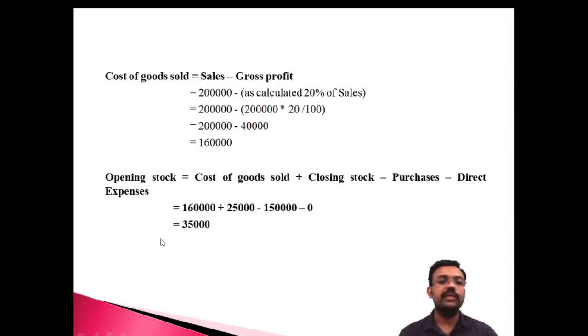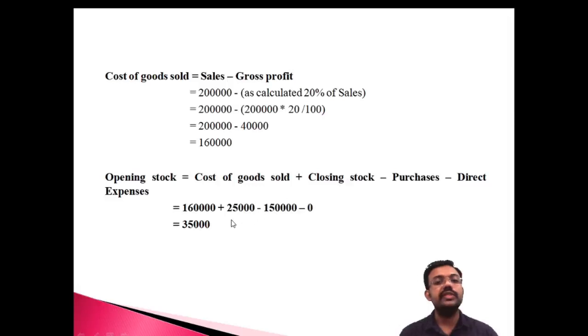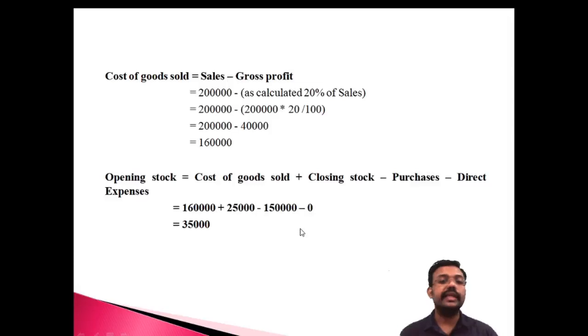To summarize Problem 1: the gross profit was given as a percentage of cost of sales and was converted to a percentage of sales. Cost of Goods Sold = 1,60,000; Opening Stock = Cost of Goods Sold + Closing Stock − Purchases = 1,60,000 + 25,000 − 1,50,000 = 35,000.